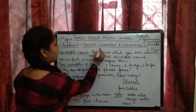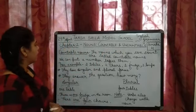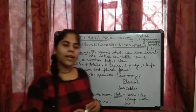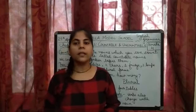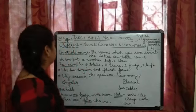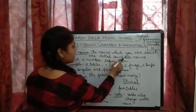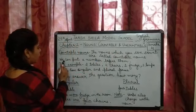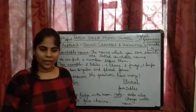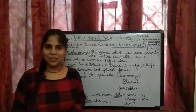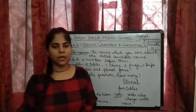Okay class, chapter 2 — nouns, countable and uncountable nouns. So, countable nouns. What are the countable nouns? You have already done this in your previous classes. The nouns which you can count are called countable nouns. We can put a number before them. For example: